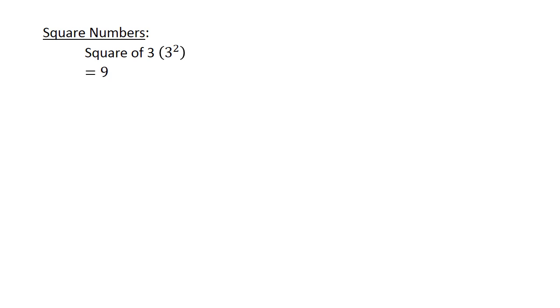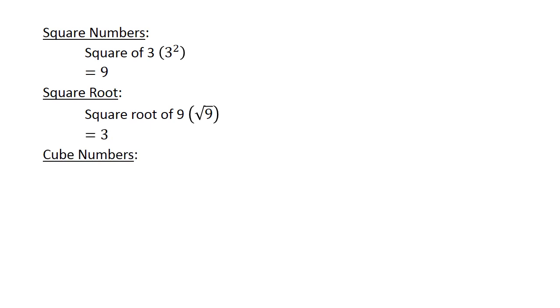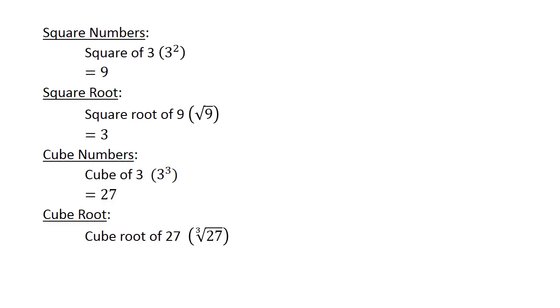Square numbers: the square of 3 equals 9. Square root of 9 equals 3. Cube numbers: the cube of 3 equals 27. And the cube root of 27 equals 3.